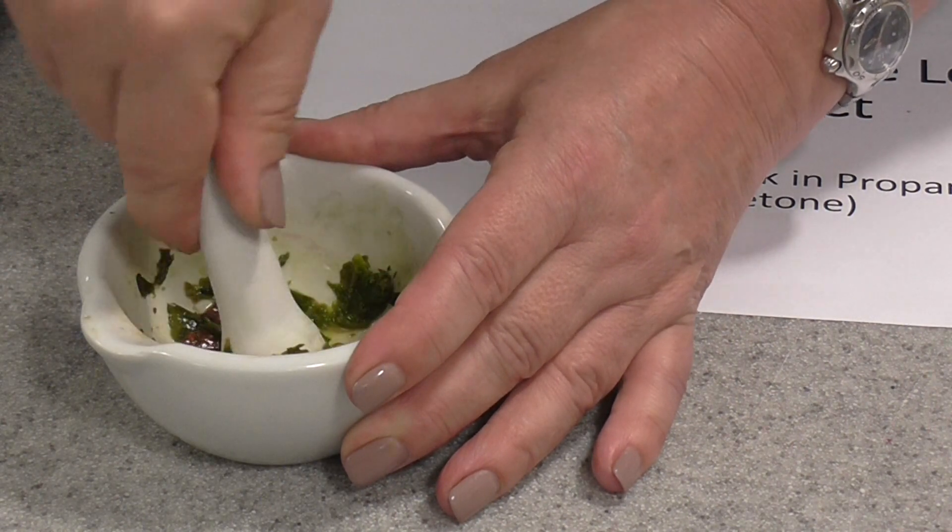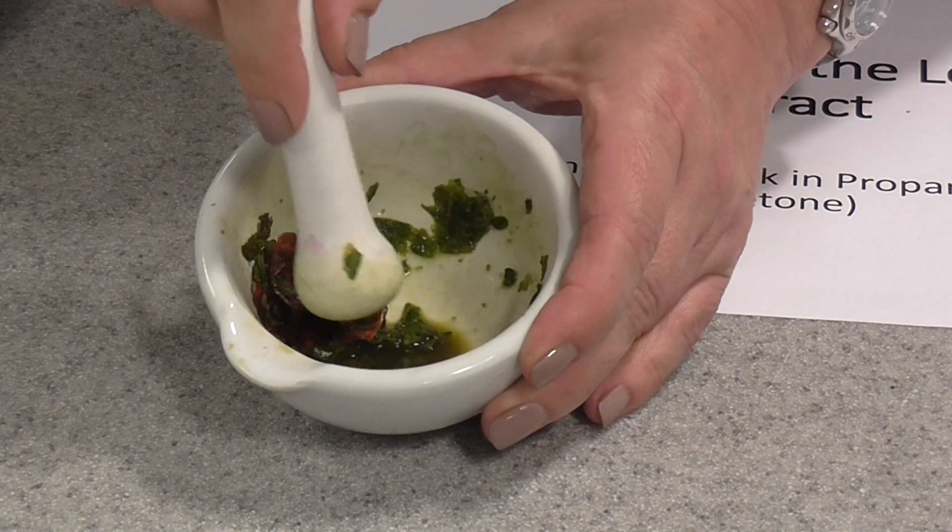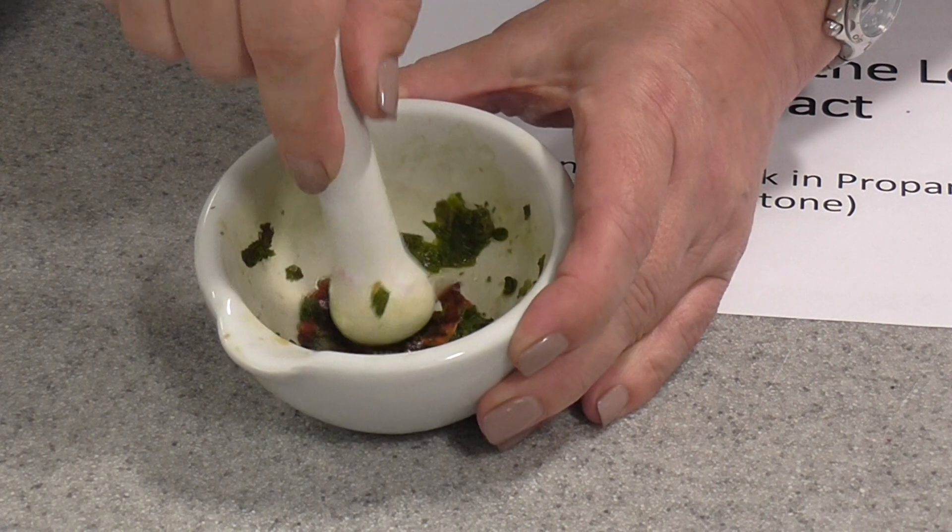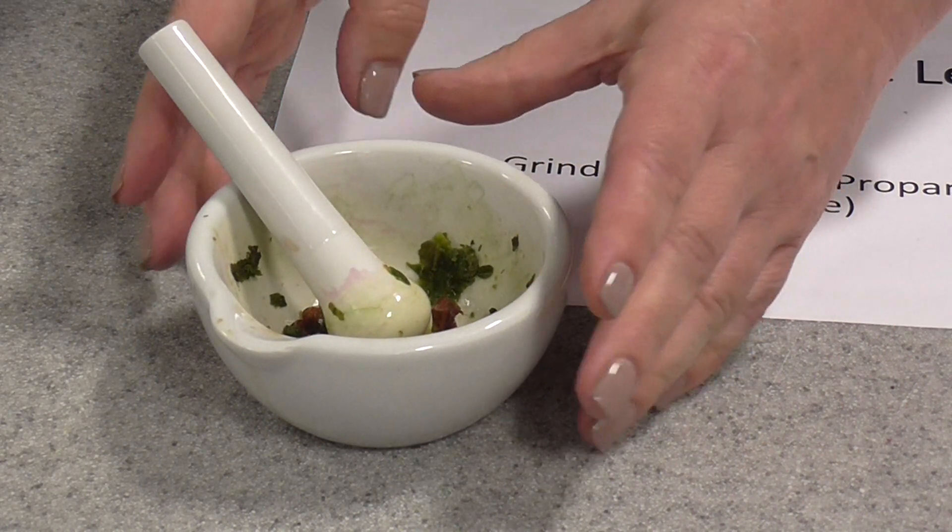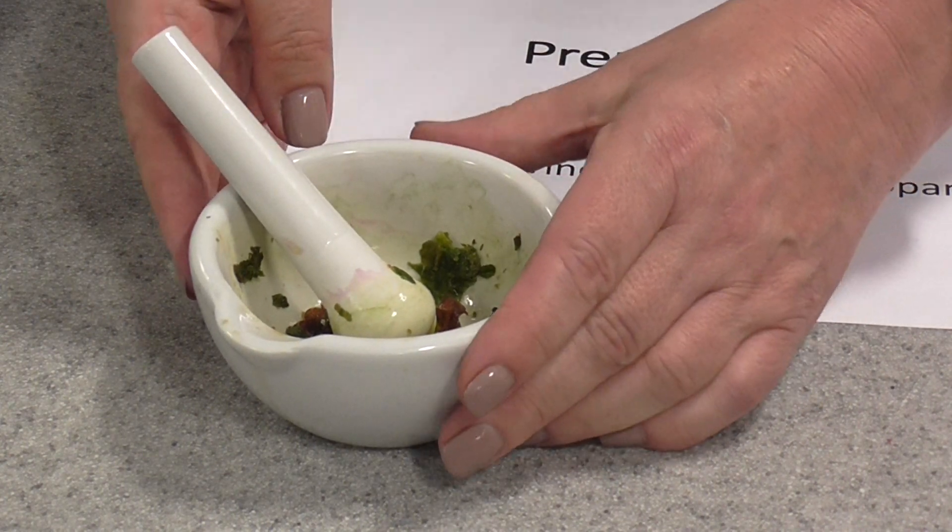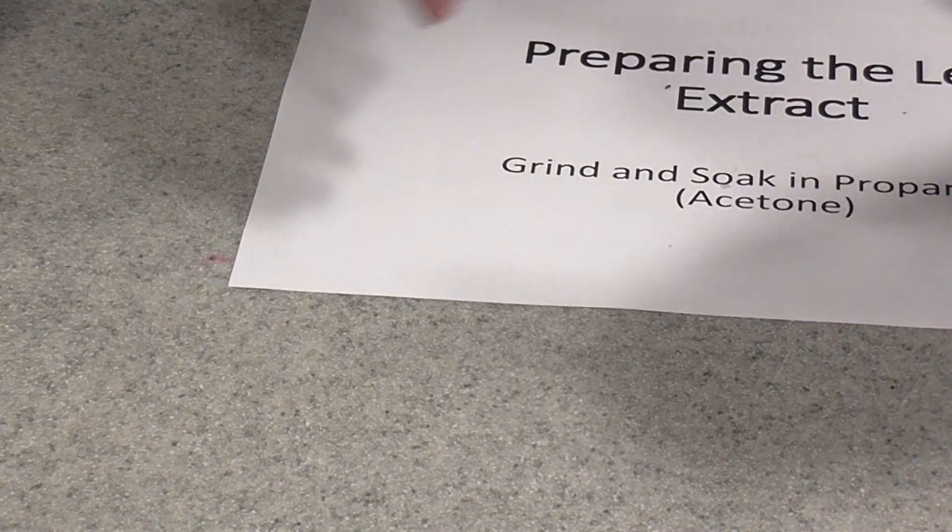You'll see that the pigments start being released into the liquid at the bottom there. This works a little bit better if you then leave that to soak for a few minutes. So it's a good idea to do that first, and then put that on one side while you prepare your TLC plate.